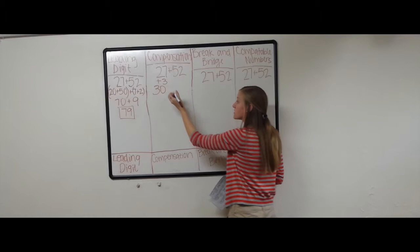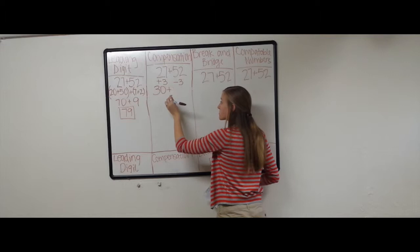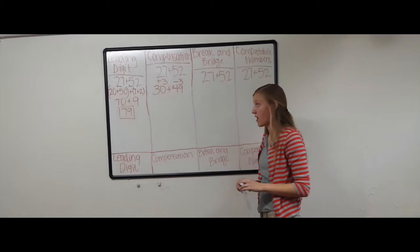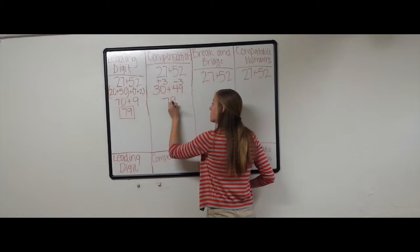To make the problem even, we're going to subtract 3. So then we still get the same answer, even if we're using different numbers. So 52 minus 3 is 49. Now we can add this much easier problem. 30 plus 49 is 79.